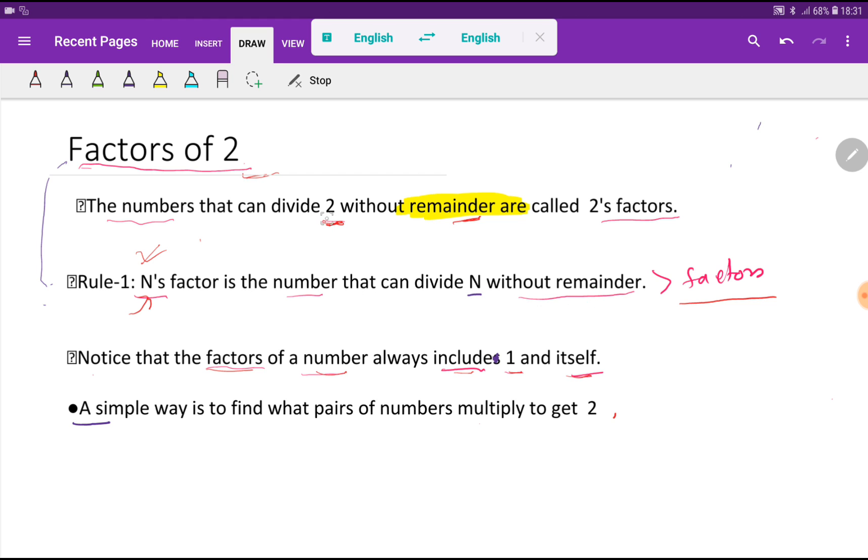So now what is the factor of two? The numbers that can divide two without any remainder are called two's factors. Notice the factors of a number always include one and itself. So the factor of two will be one and itself, which means two.